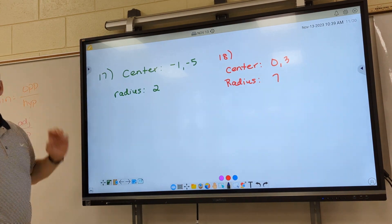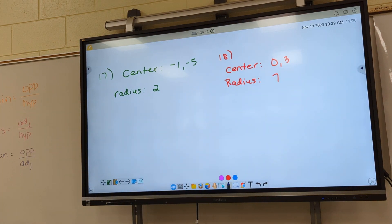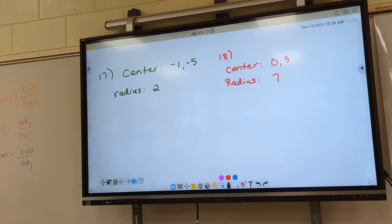All right, number 17. Let's read your instructions above 17. It says, write an equation of the circle, giving the coordinates. Let's focus on the center and the radius.